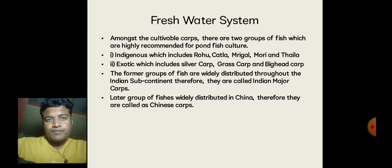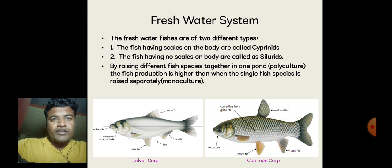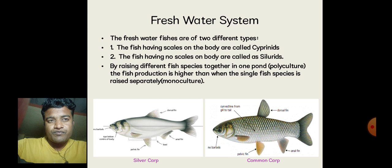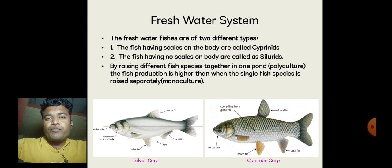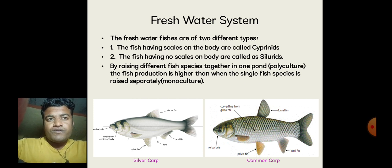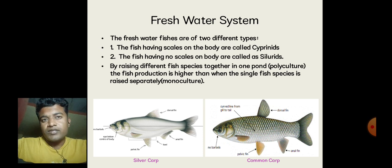In the fresh water system, fresh water fishes are of two different types. Fishes having scales on the body are called Cyprinids. Those fishes having no scales on the body are called Silurids — some fishes are smooth and scales are not found on their body, so they are called Silurids.